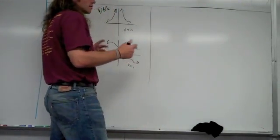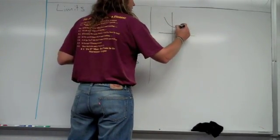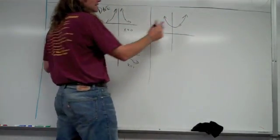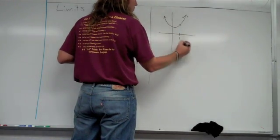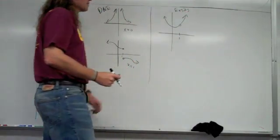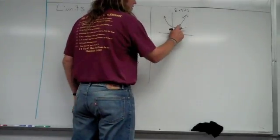But we want to make sure that we do realize that something like this, if we have something like this, where there's a hole in the graph, this limit exists. So let's say that's at x equals one, so that limit exists. Hopefully I'm spelling things right, I'm sorry if I'm not. At x equals one, this has a limit.